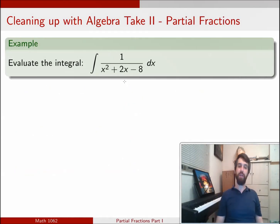This is the method of partial fractions. The first step of this technique is to factor the denominator in the usual way. So I'm going to take my x squared plus 2x minus 8 and I'm going to rewrite this as I need to multiply to minus 8 and I need to add to 2, so I'm going to have x plus 4 times x minus 2.